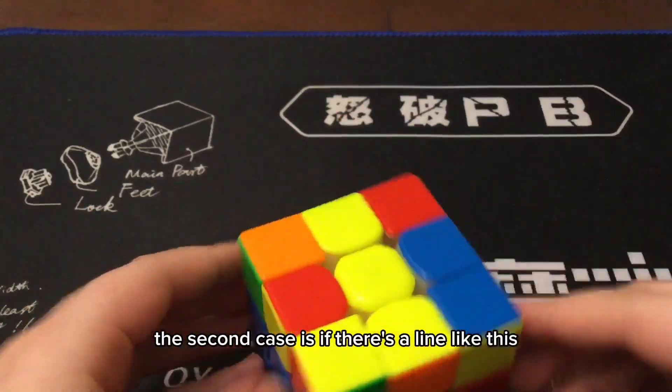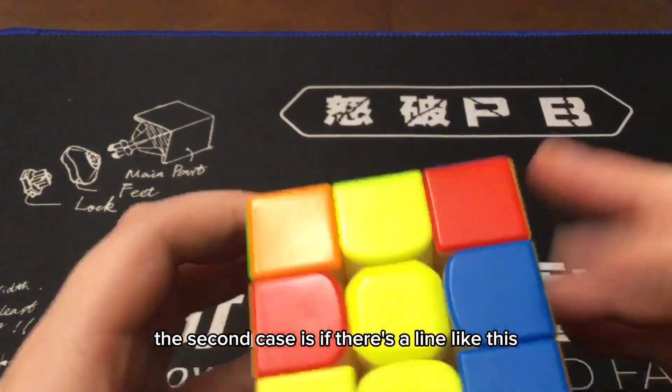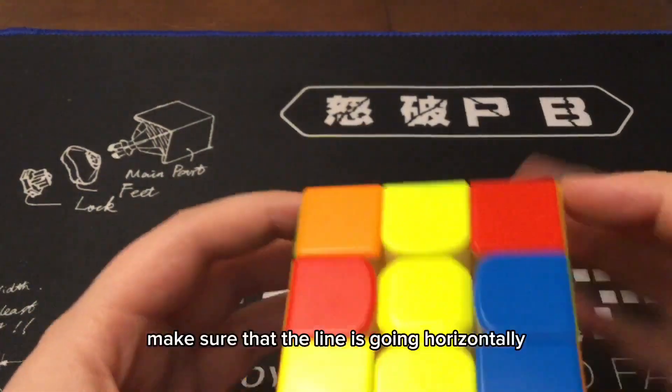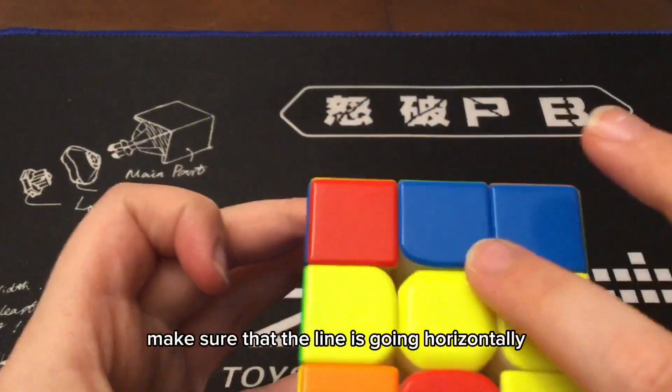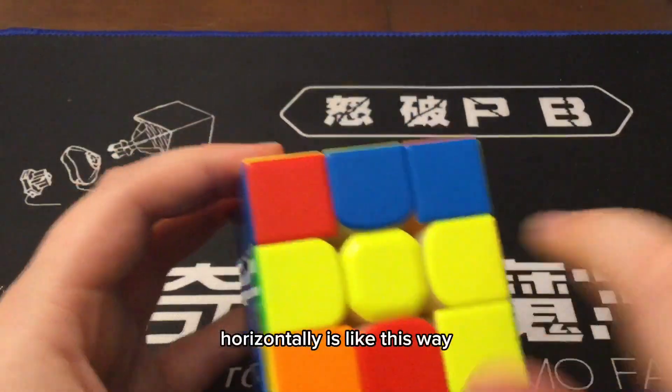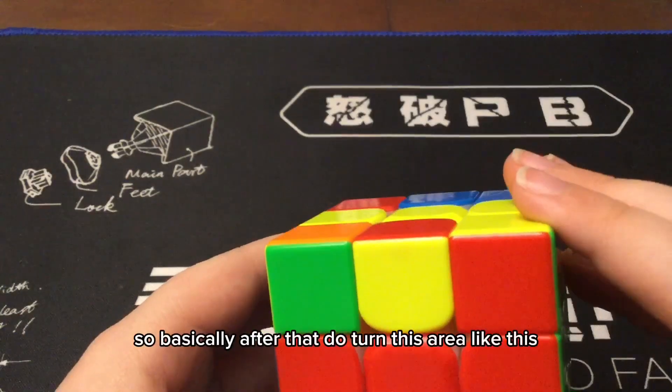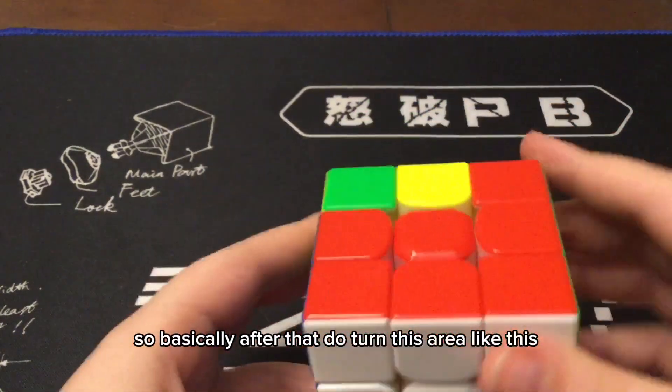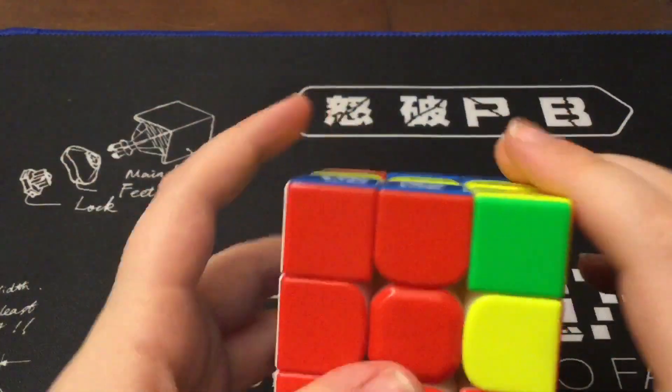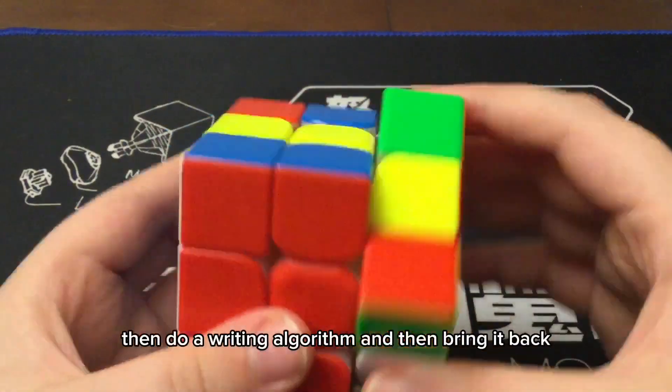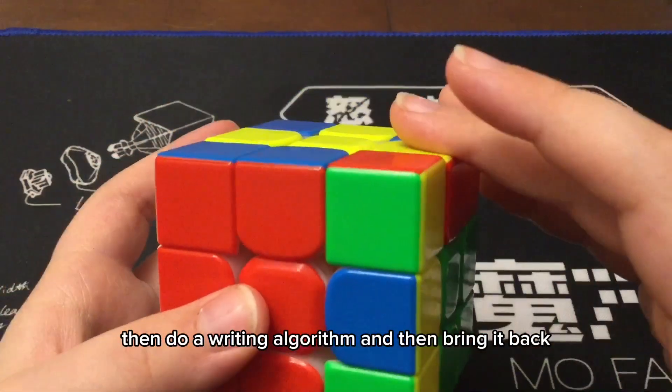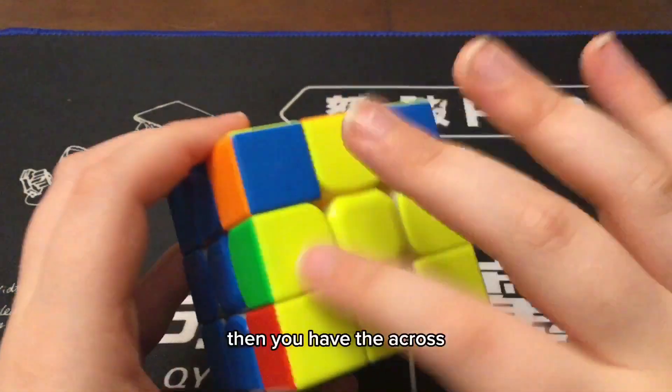The second case is if there's a line like this. Make sure that the line is going horizontally. Horizontally is like this way. Vertically is this way. So, basically, after that, turn this area like this, then do a righty algorithm, and then bring it back. Then you have the cross.